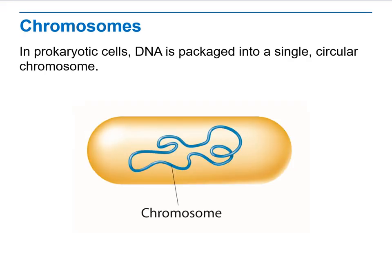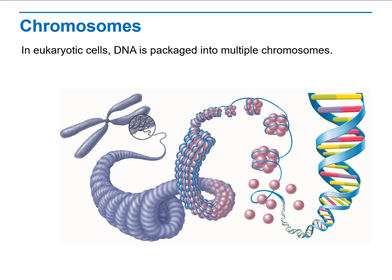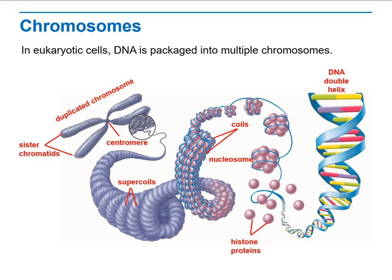Prokaryotic cells have one DNA as a single circular strand with a plasmid inside. In eukaryotic cells, it's a more complicated process called DNA condensation, where the DNA starts as two strands, uses histone proteins to become coiled and then supercoiled, forming two sister chromatids bound together with a centromere — which is what we call a chromosome. As you can see, this is a double helix DNA with histone proteins binding with nucleosomes, then coiling and supercoiling until we reach the end product: duplicated chromosomes with two sister chromatids and a centromere.